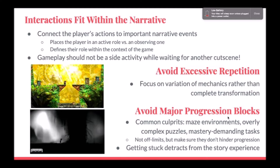Element five: avoiding major progression blocks. We've all played a game where one task or enemy was so punishingly difficult we had to consult a walkthrough, and obviously this can detract from immersion. Common examples of major progression blocks include maze environments, overly complex puzzles, or tasks that demand a level of mastery some players may not be able to achieve. For example, Limbo is designed to be somewhat difficult, often killing off the player in gruesome ways. However, the game is also designed to allow for easy progression — traps are easy to grasp, and the player is returned to checkpoints rather than sent back to the beginning. So even though Limbo is difficult, it doesn't force the player to stall to the point of frustration, allowing them to remain immersed in the narrative.